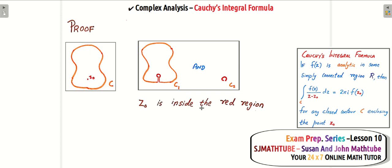So z naught is inside the red region. The red region is here. It's not here. And you have to understand one more thing. This is the circular region, right?